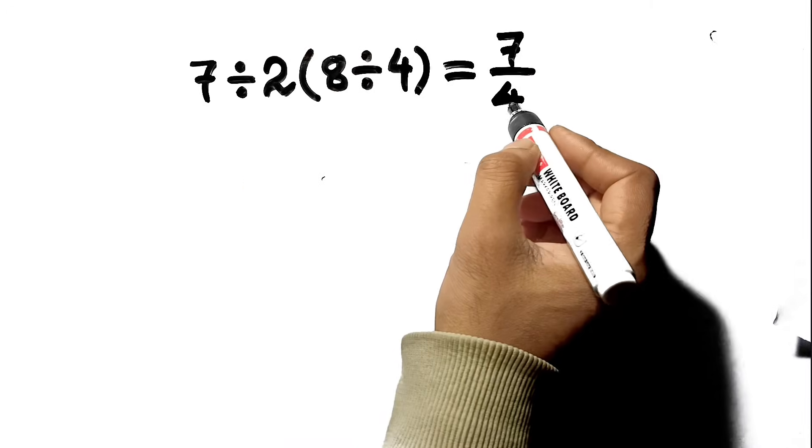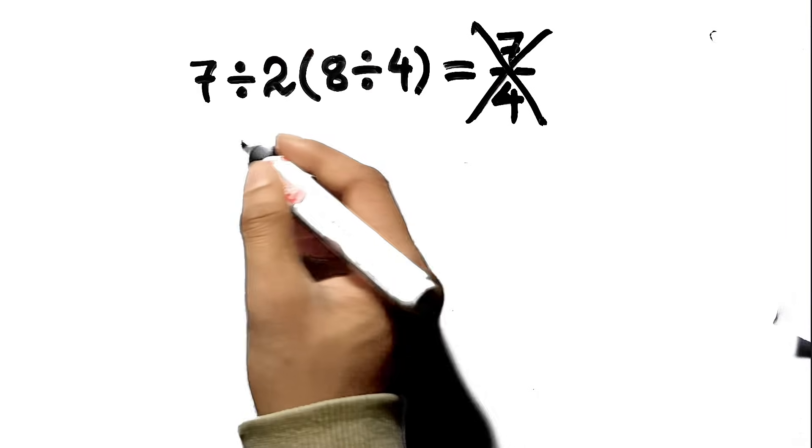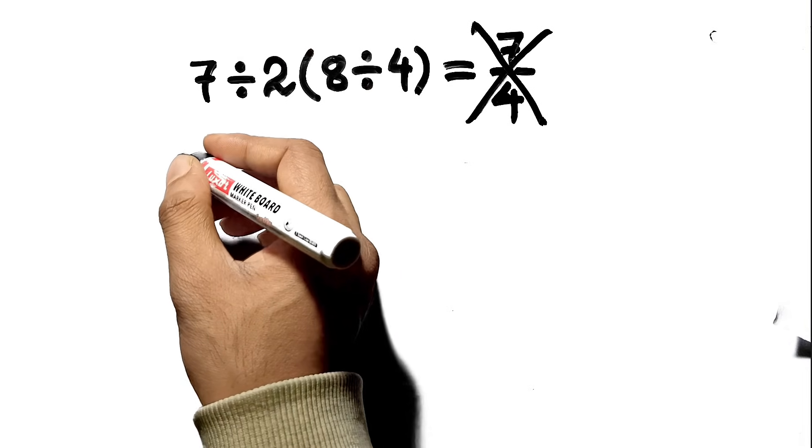If you think the answer is 7 over 4, you are absolutely wrong. I get it, and here's why so many people jump to that conclusion.